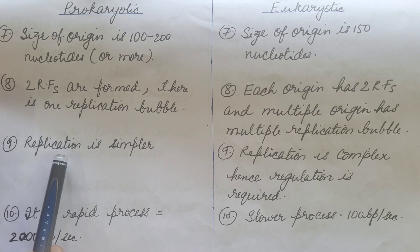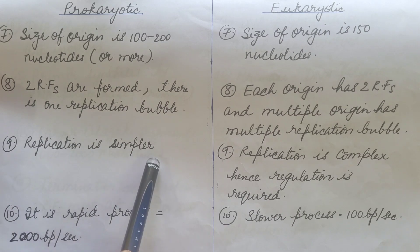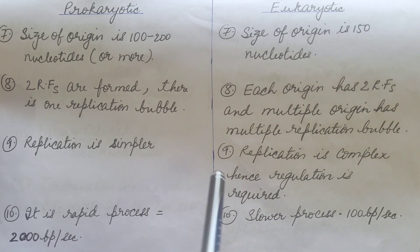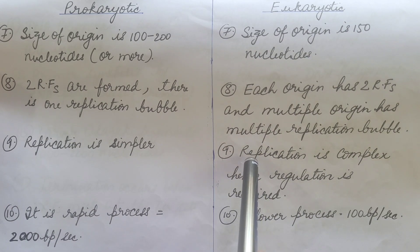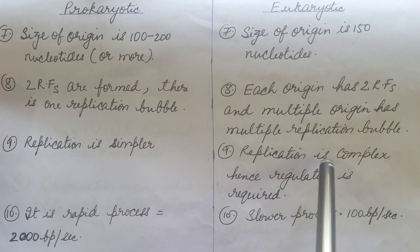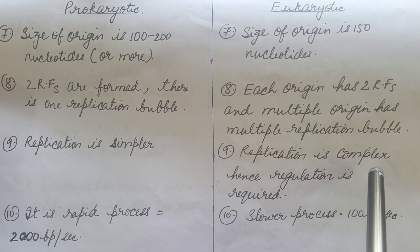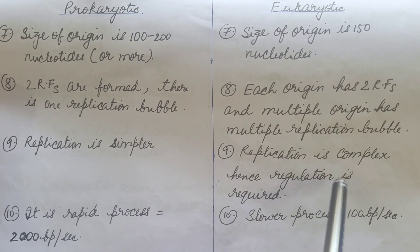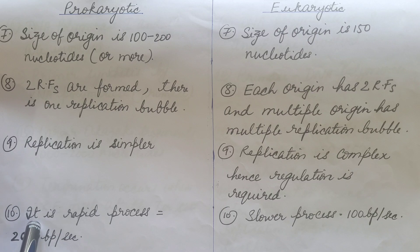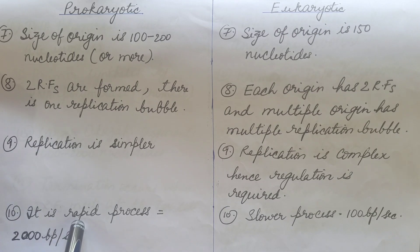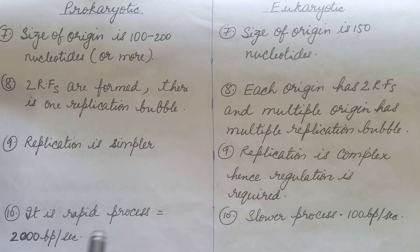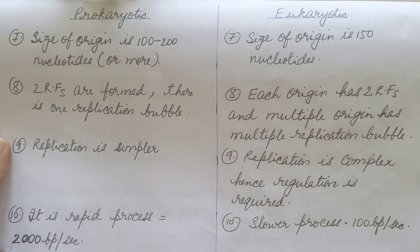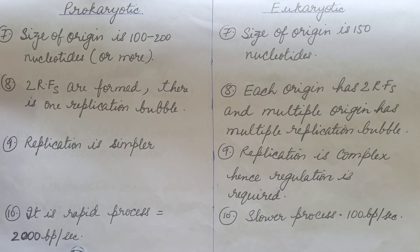Prokaryotic replication is simpler, but eukaryotic DNA replication is complex and hence regulation is required. Prokaryotic DNA replication is a rapid process, with a rate of 2000 base pairs per second.